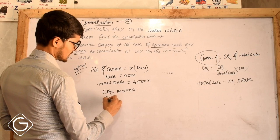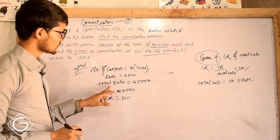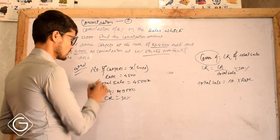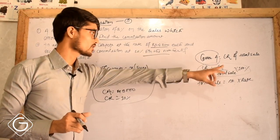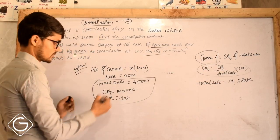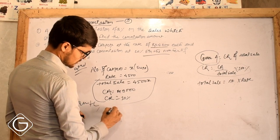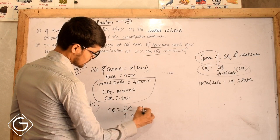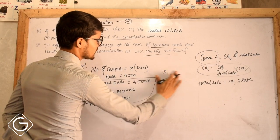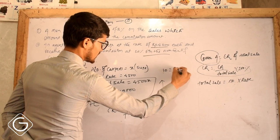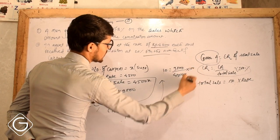Commission rate CR is 10%. The formula: CR is equal to CA divided by total sale, into 100%. So: 10% is equal to 9,000 divided by 4,500X, into 100. Zeros cancel.